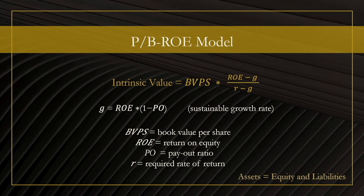Now, in regards to book value, it is usually defined as assets minus intangible assets minus liabilities, but in practice the intangible assets are often ignored, and equity and book value are treated as the same thing. For example, if a company has 100,000 shares outstanding and $1 million in equity, then the book value of a share is $10.